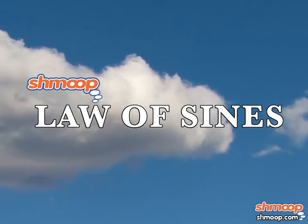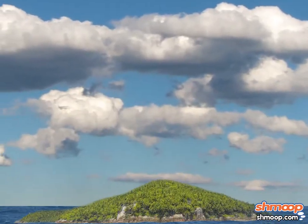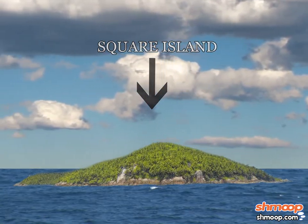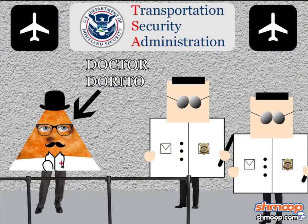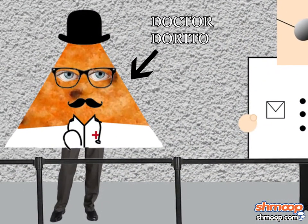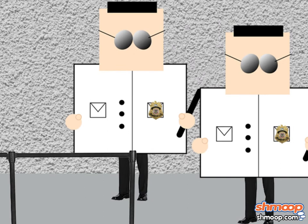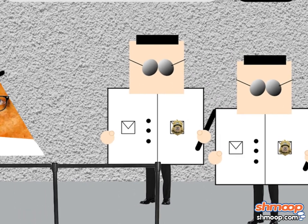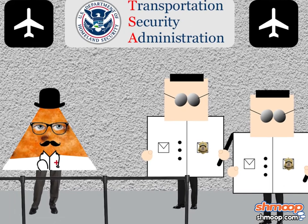Law of Sines, a la Shmoop. Dr. Dorito is entering airport security at Square Island. He looks a little different from all the other Square inhabitants, so Square Island's security is a bit wary of him. His less than 90-degree angles and weirdly slanted arms are also a bit suspicious.